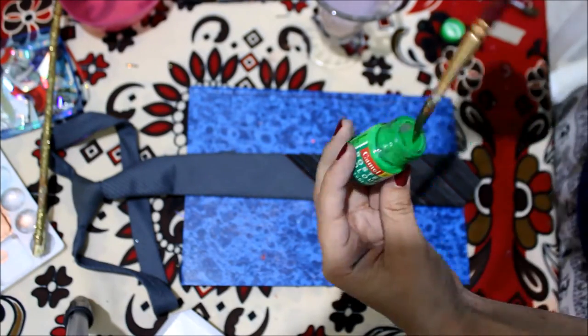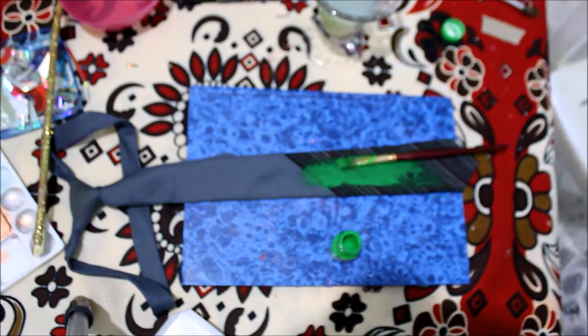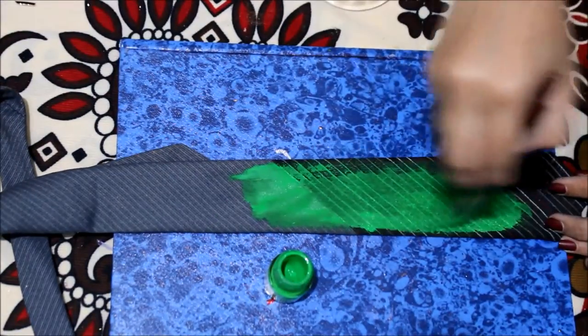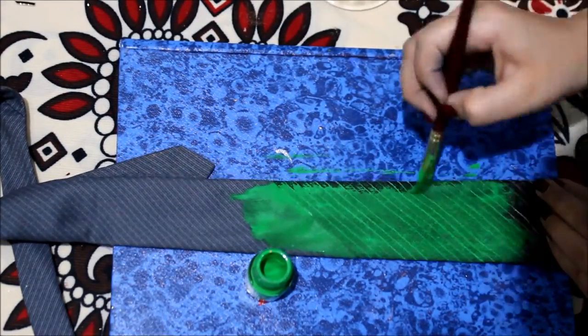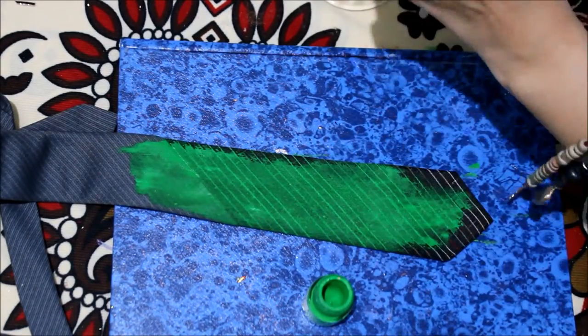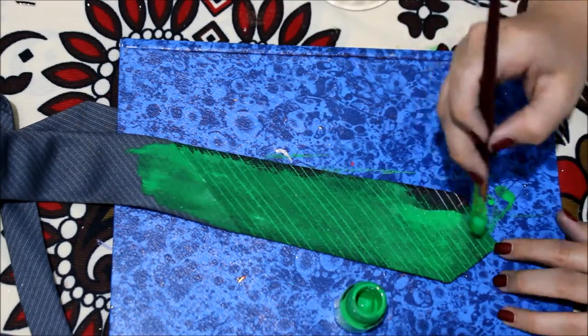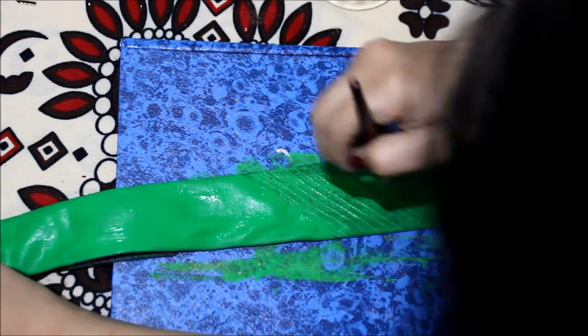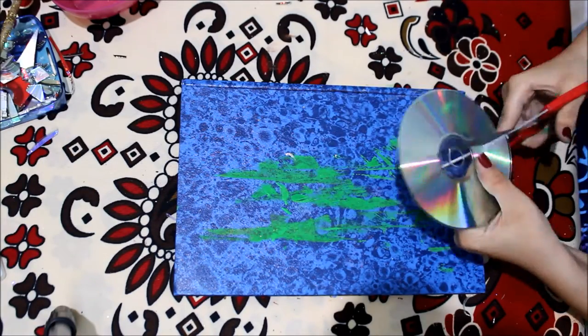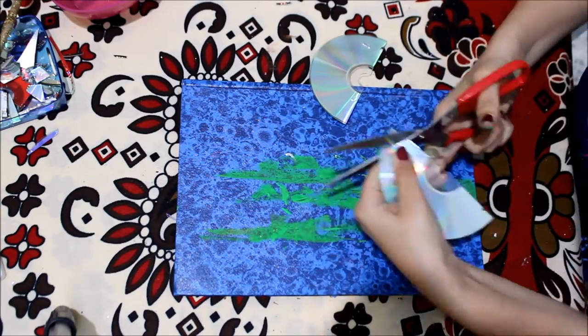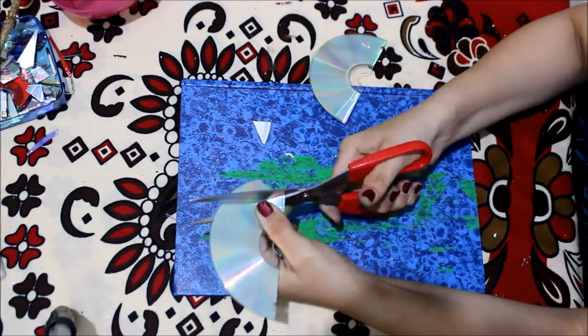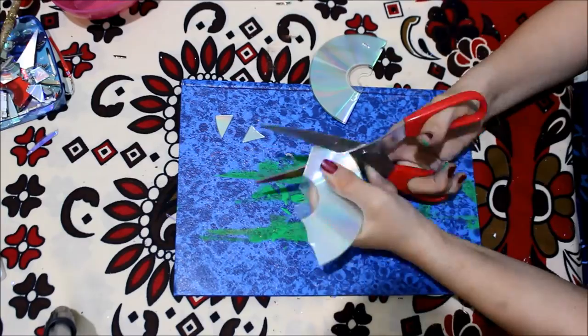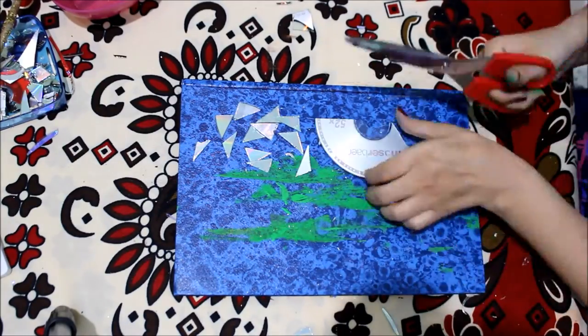And now for the next tie, I chose to cover the whole tie with tiny CD pieces, and that's why I am covering the whole tie with a background color as well. This time I've chosen green as my background color because I wanted a change from black. Also, as this tie was a thinner tie than the previous one, I chose to cut the triangles a little smaller and tinier compared to the one cut in the first one.